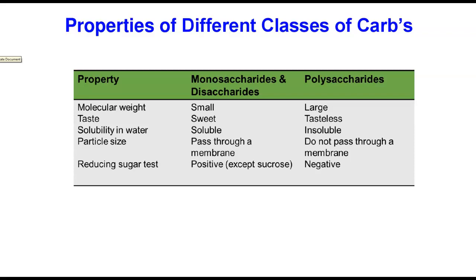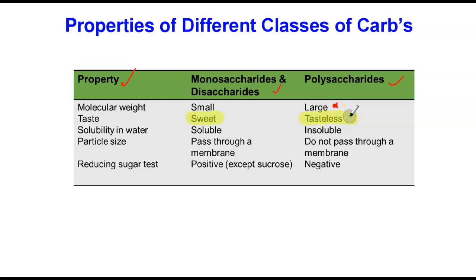Before we unpack all that, let's look at a properties table comparing carbohydrate classes. The table has three columns. Regarding molecular weight, monosaccharides and disaccharides have small molecular weights, whereas polysaccharides have large — even very large — molecular weights because they contain thousands of monomeric units. Regarding taste, monosaccharides and disaccharides are very sweet, whereas polysaccharides are tasteless.